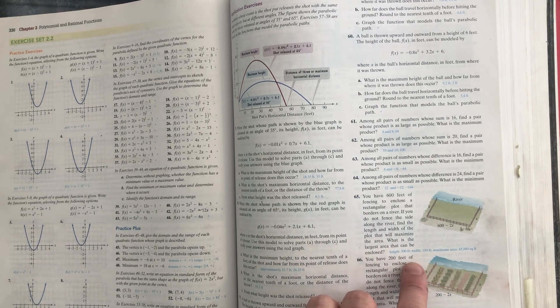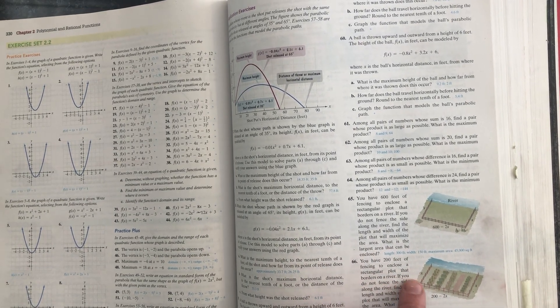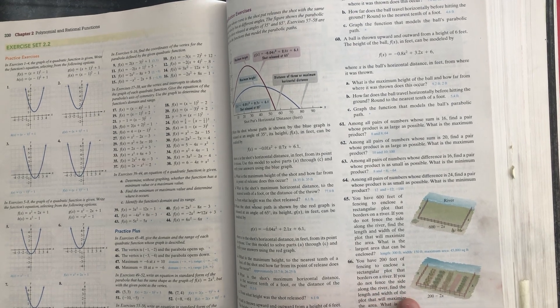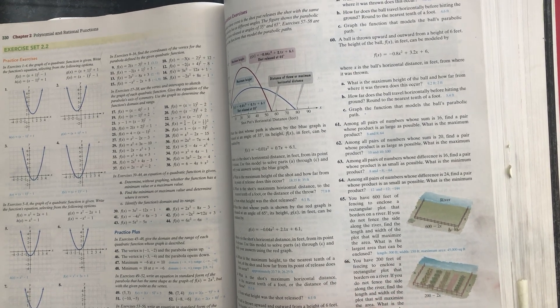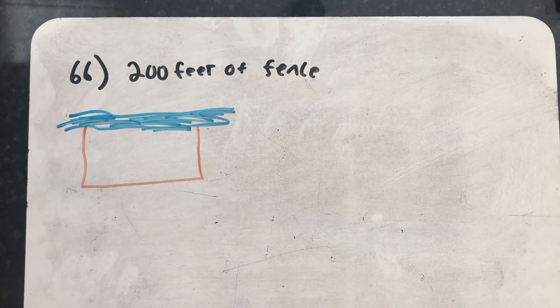Problem number 66 asks us to maximize the area of a rectangle. You have 200 feet of fencing to enclose a rectangular plot that borders a river. If you do not fence the side along the river, find the length and width of the plot that will maximize the area. What is the largest area that can be enclosed?